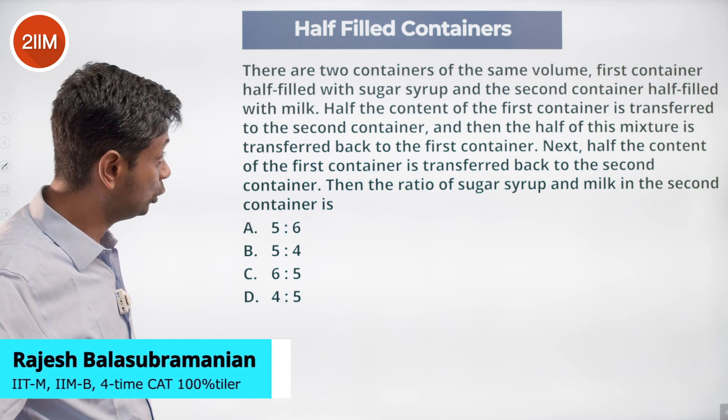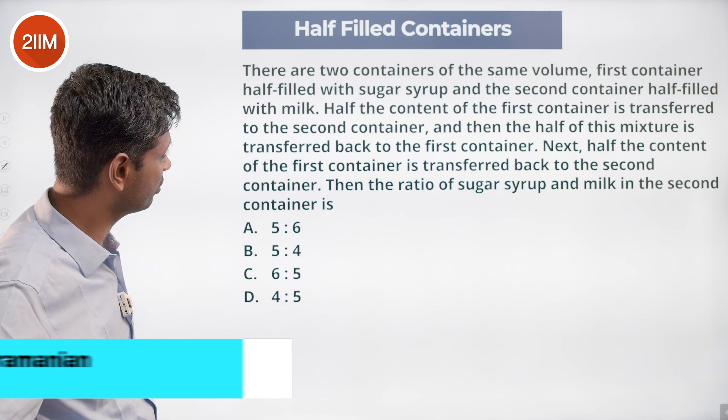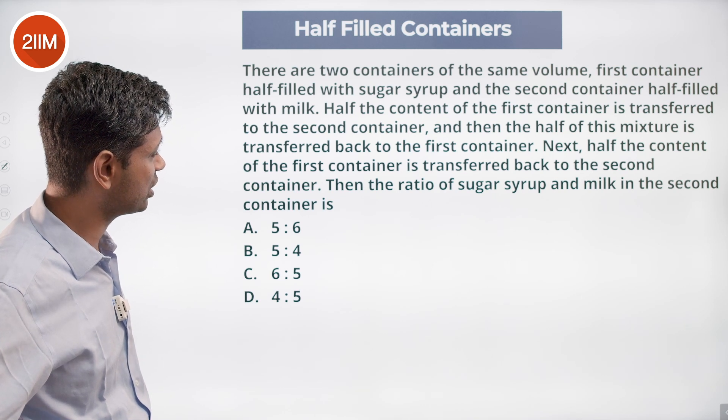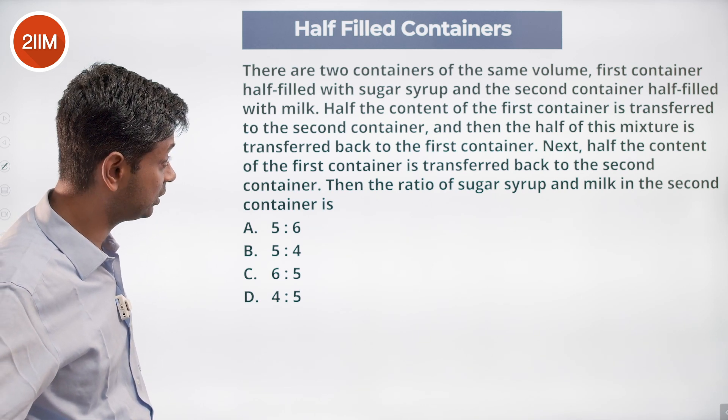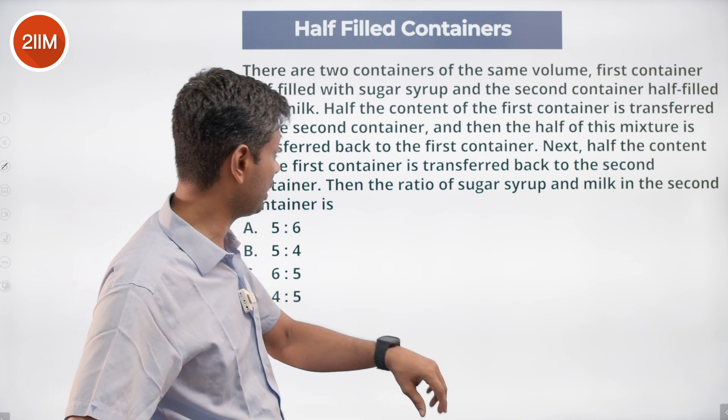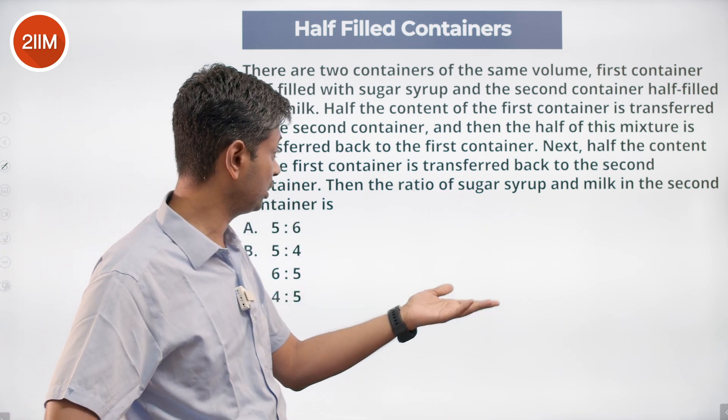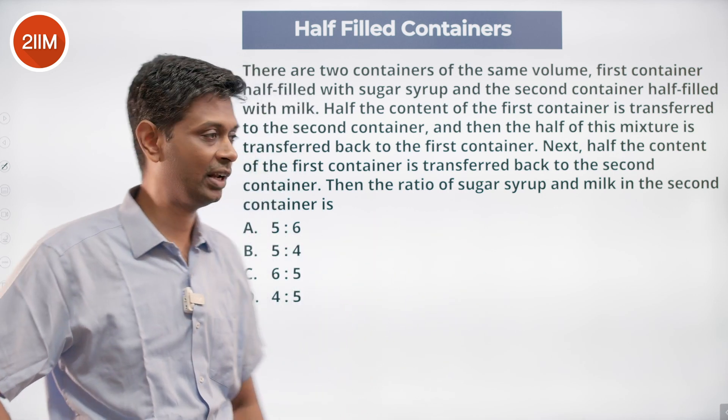The two containers are the same volume. The first container is half filled with sugar syrup and the second container half filled with milk. Half the content of the first container is transferred to the second container, then half of this mixture is transferred back to the first container. Next, half of the first container is transferred back to the second container. We stopped there luckily.